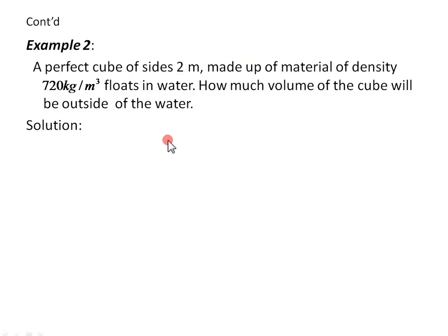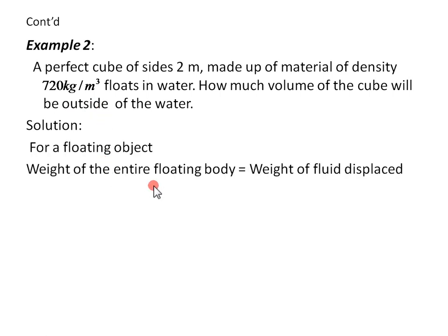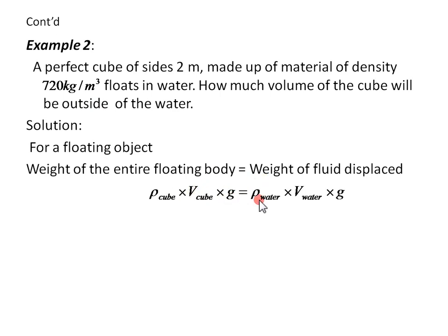Example two: a perfect cube of side 2 meters, made up of material of density 720 kilograms per cubic meter, floats in water. How much volume of the cube will be outside of the water? For a floating body, the weight of the entire floating body equals the weight of the fluid displaced. So density of the cube times volume of the cube times G equals density of water times volume of water times G.